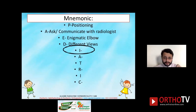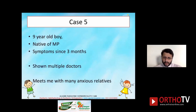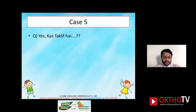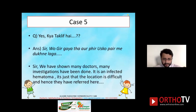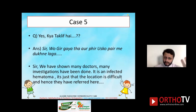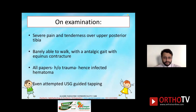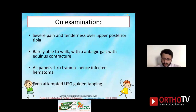I — Incidental Trauma. A nine-year-old boy from rural India presented with symptoms for three months. Multiple doctors had diagnosed an infected hematoma based on a history of trauma. At examination, he had severe pain and tenderness over the upper posterolateral tibia, was barely able to walk with a severe antalgic gait with an equinus contracture. All referral papers said: history of trauma, hence infected hematoma.